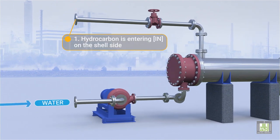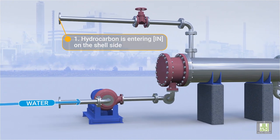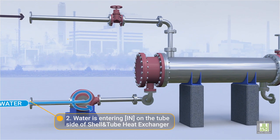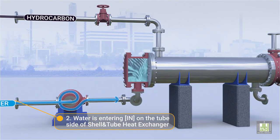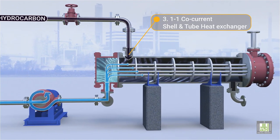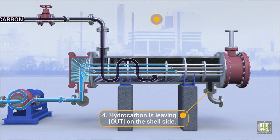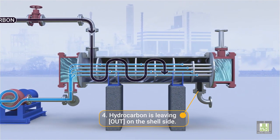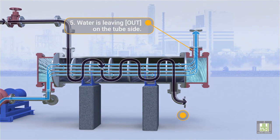Flow pattern: 1. Hydrocarbon is entering on the shell side. 2. Water is entering on the tube side of the shell and tube heat exchanger. 3. 1-to-1 co-current shell and tube heat exchanger. 4. Hydrocarbon is leaving out on the shell side. 5. Water is leaving out on the tube side.